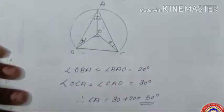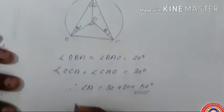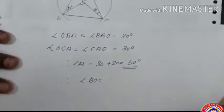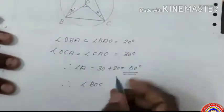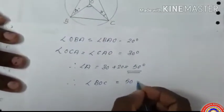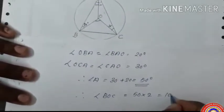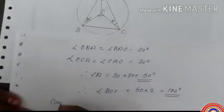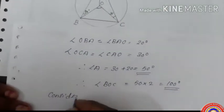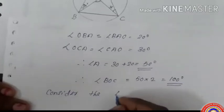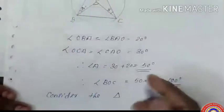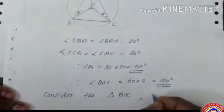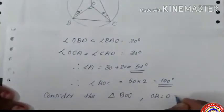Using this, we find angle O. Angle O is double of angle A: 50 times 2 equals 100 degrees. Consider triangle BOC — it is an isosceles triangle because OB equals OC, both radii of the circle.